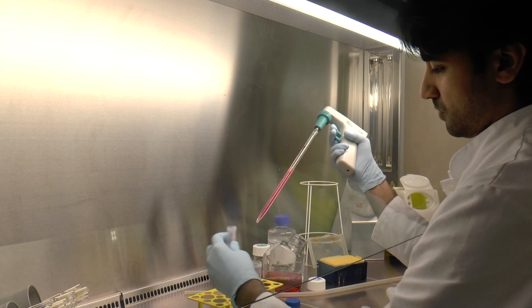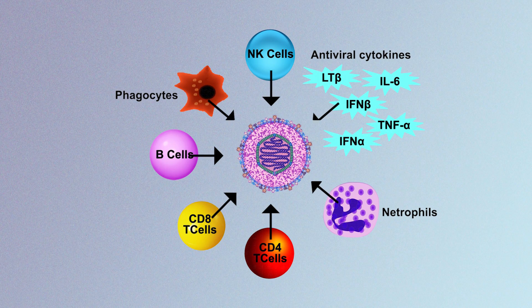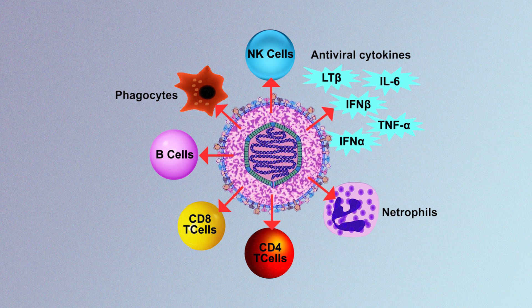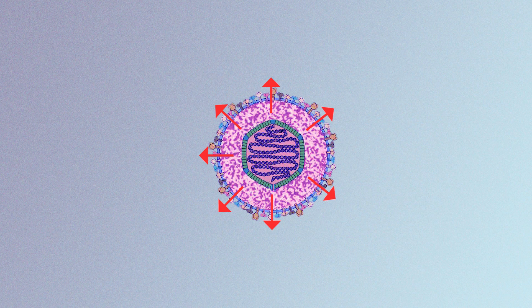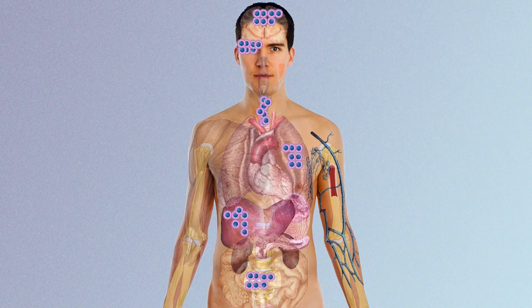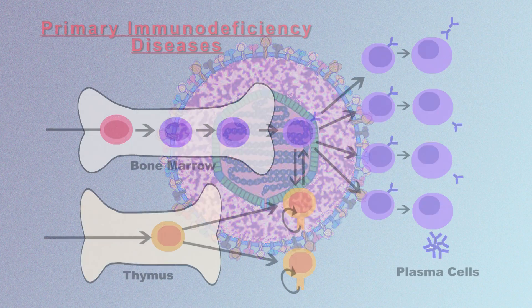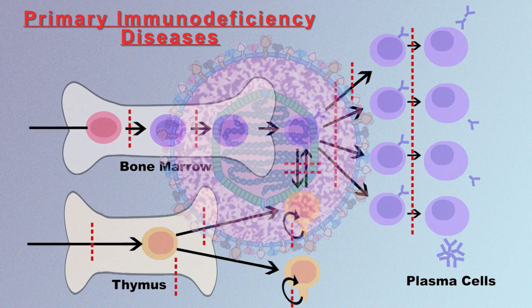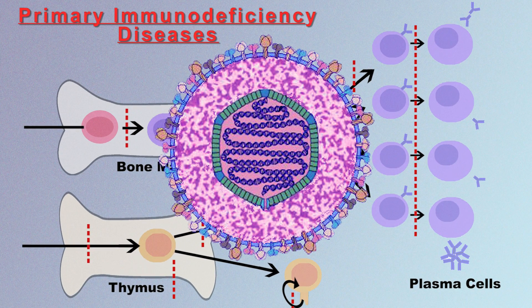On one side we try to understand the immune response and the way our immune system controls the virus. On the other side, we try to understand the virus itself — the mechanisms it uses to turn off our immune system, and how it decides whether to be latent or active, which we call lytic. How does the virus figure out that a person is immunologically compromised? If we can answer that, we can develop treatments that will convince the virus to stay put and remain latent.